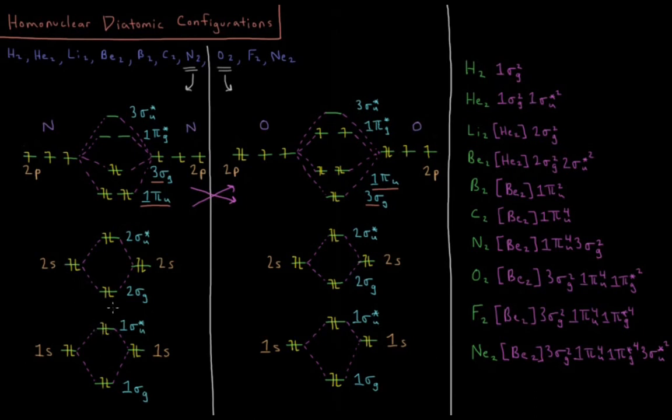The 2s orbitals overlap to form 2sσg and 2sσu* bonding and antibonding orbitals. Then we have in the 2p level, the 2pz orbitals combine to form the 3sσg and 3sσu* bonding and antibonding orbitals.